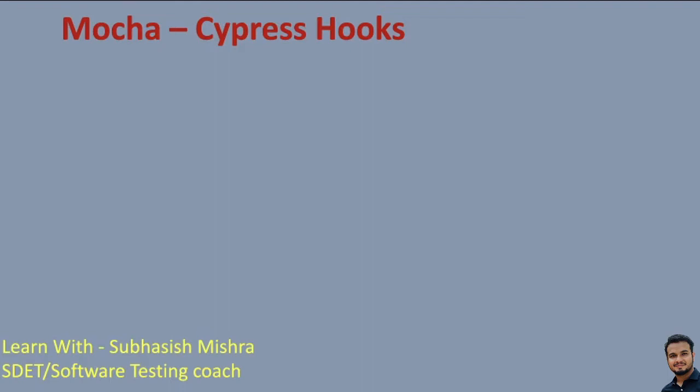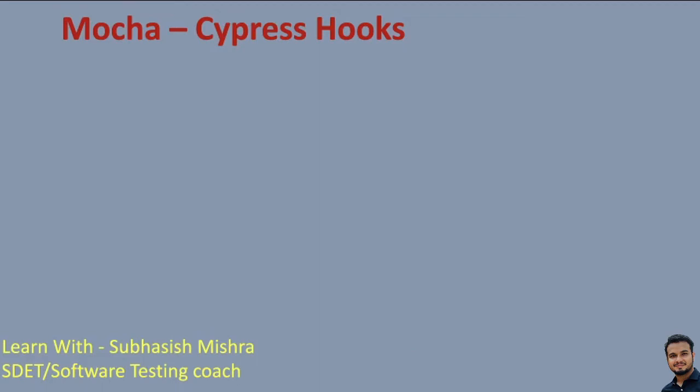If you understand the TestNG framework, there we have seen annotations like before method, after method, before class, after class, before suite, after suite — those are used to organize the test cases. Similarly, Cypress also provides hooks which are borrowed from Mocha framework. Those hooks are helpful to set conditions that you want to run before a setup test or before each test. They are also helpful to clean up conditions after a setup test or after each test.